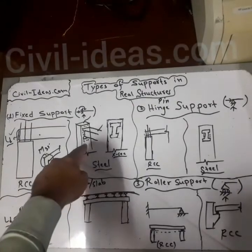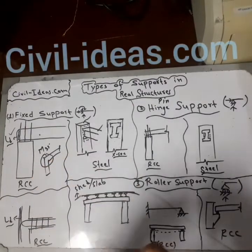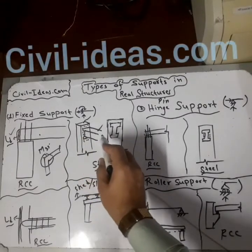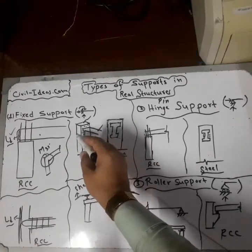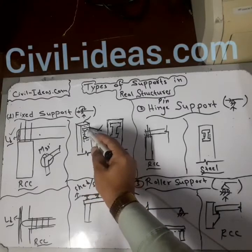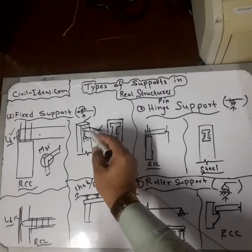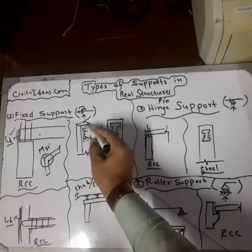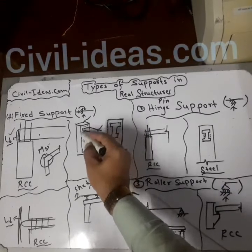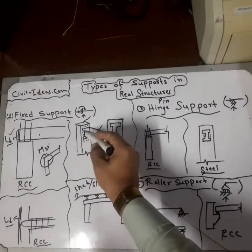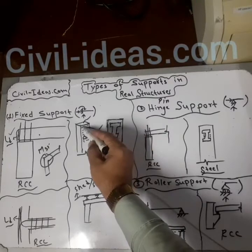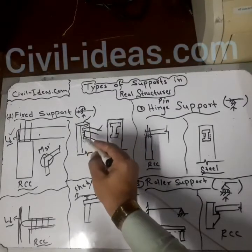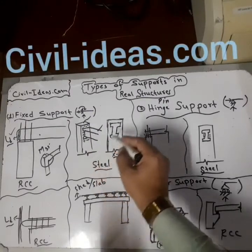In a steel structure, this is a column and this is an I-section beam — both are steel. To make a fixed support, you fix the beam to the column with bolts or welds. If you provide bolts throughout the perimeter of the beam section, or weld all around, then this is a fixed support.